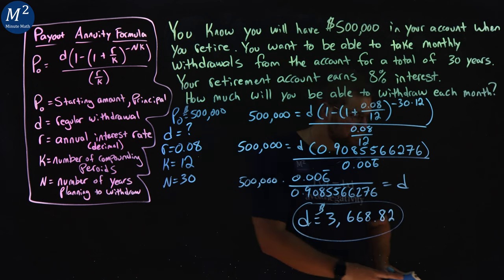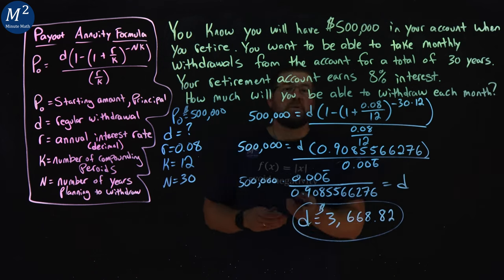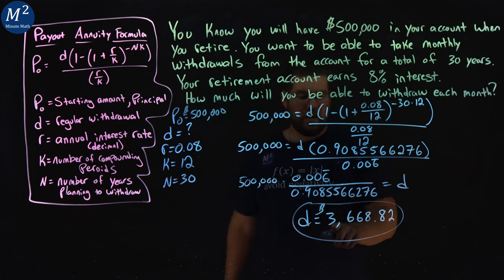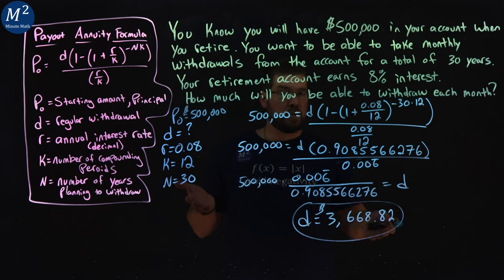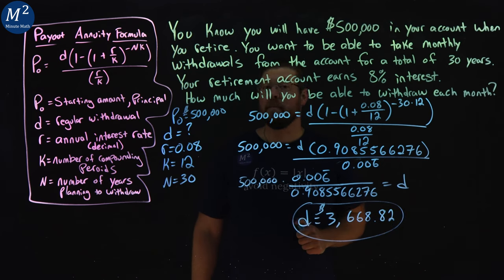So, after all that, how much we can withdraw each month is $3,668.82. I hope you learned something here, and as always, thanks for watching.